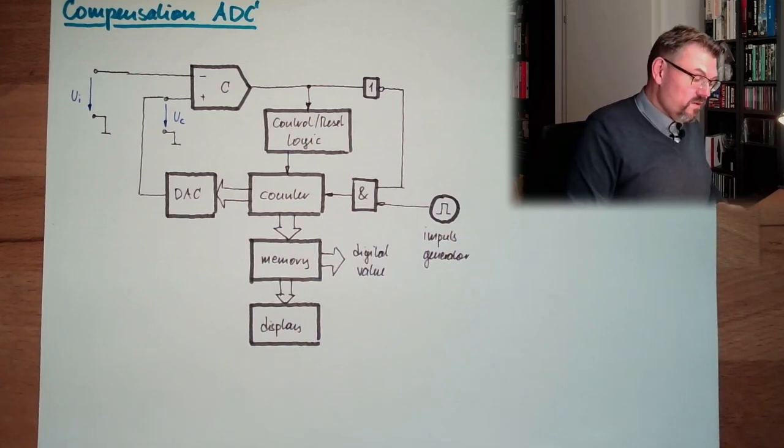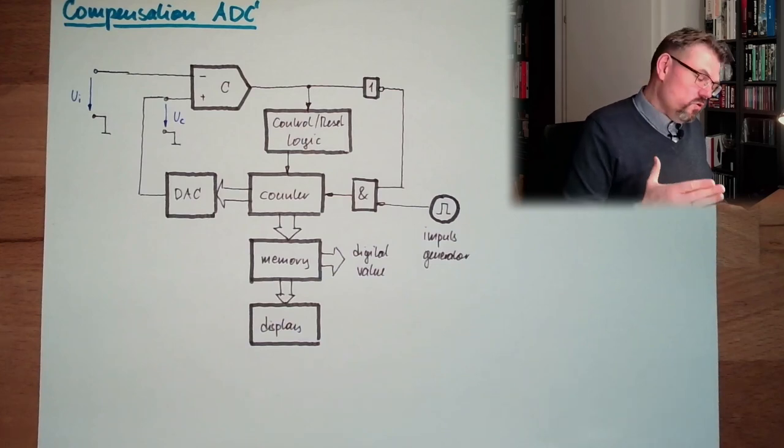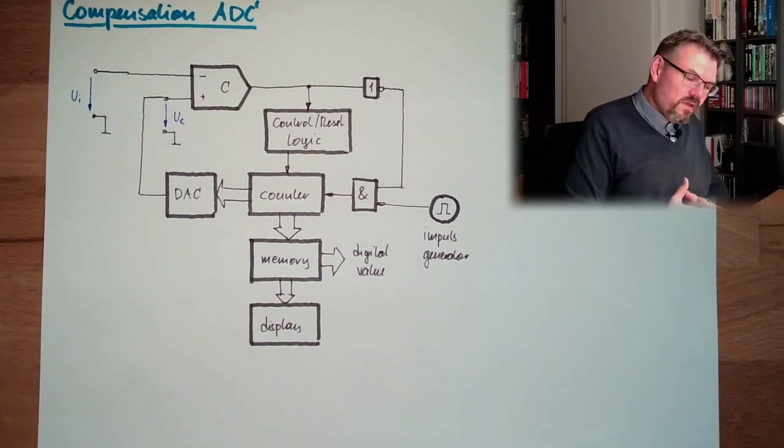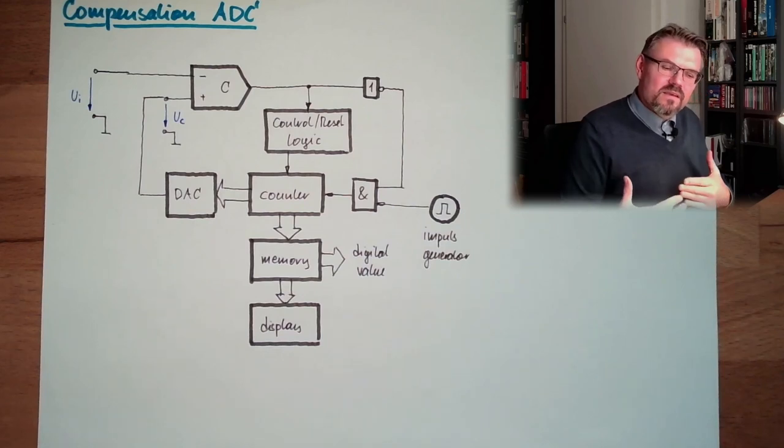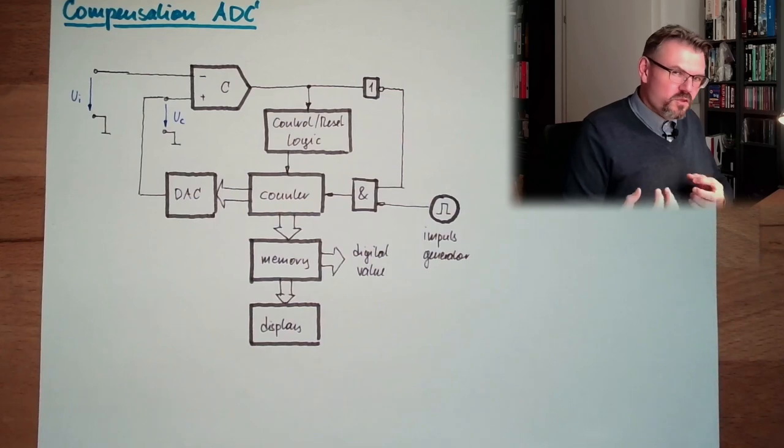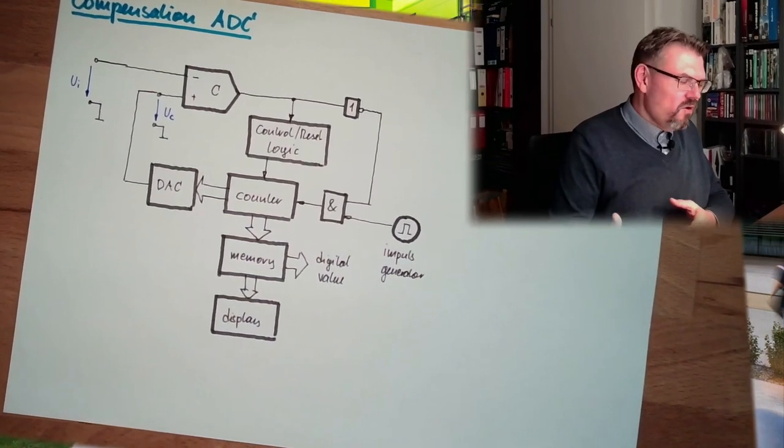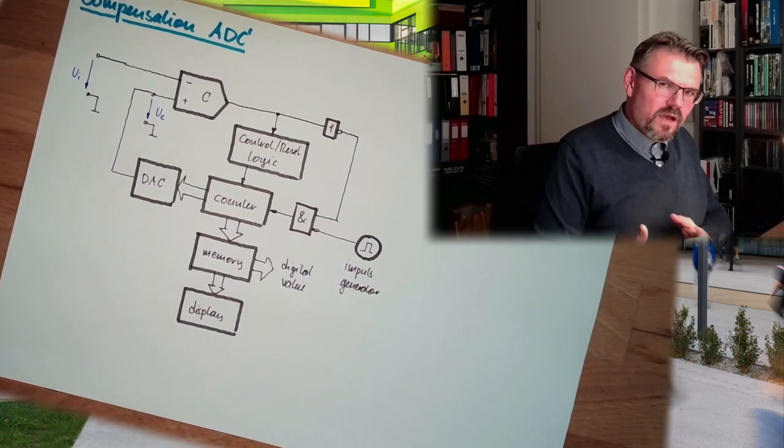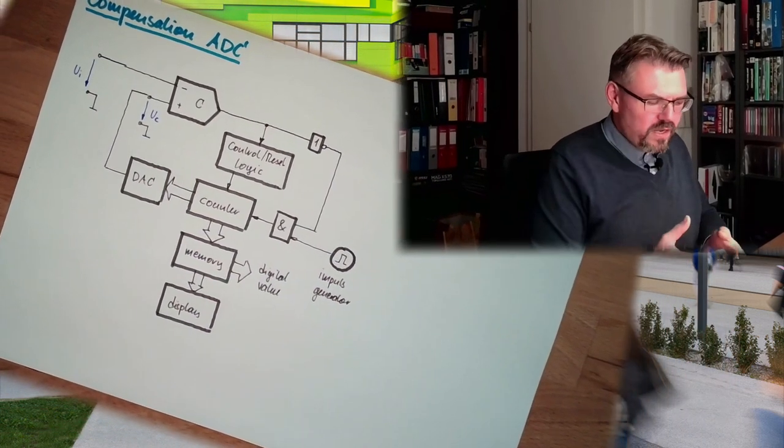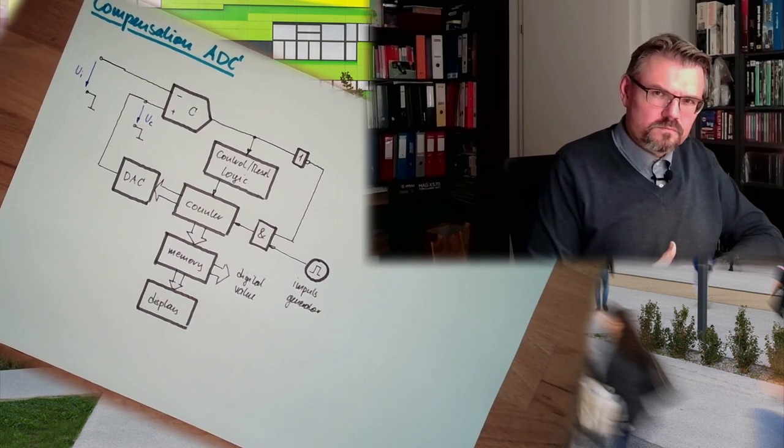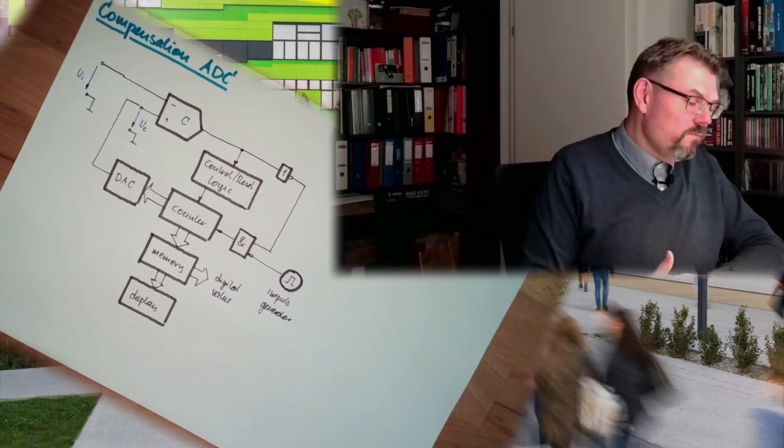What is not that good is that we always start to count at zero. We always start to count at zero, counting up until we have reached. This means the transfer time, the time to get a digital value is somehow influenced by how big UI currently is. Bigger UI need bigger time, longer time, and smaller UI's need shorter time to get a digital value from. Compensation ADC.